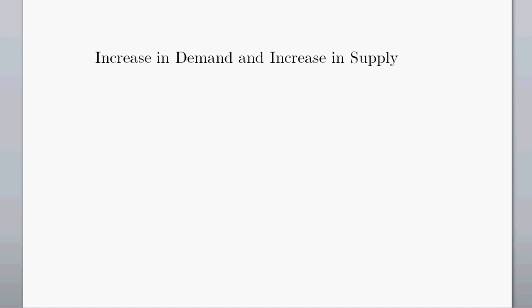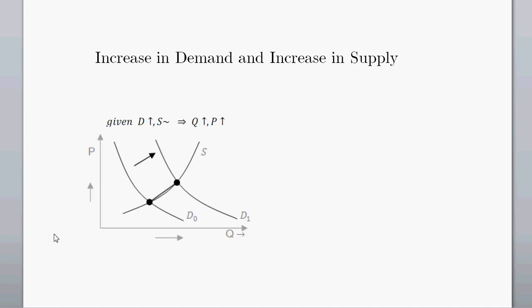What happens when you have an increase in demand and an increase in supply? Let's break it down into two parts. First, with an increase in demand — our initial demand curve at D sub nought increases to D sub 1 — we know that quantity is going to increase and price is going to increase.